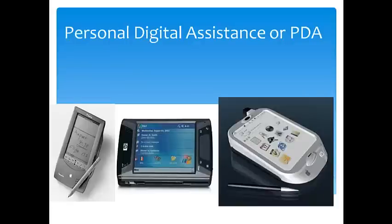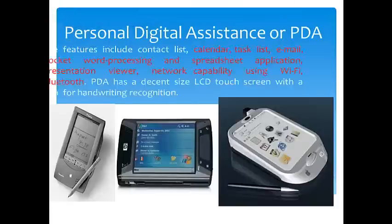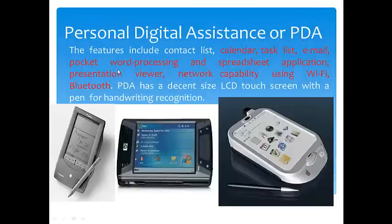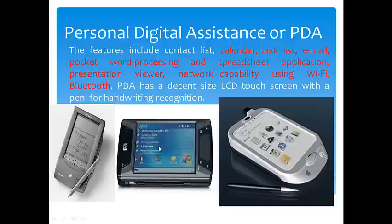Next comes the personal digital assistant, or PDA. The features of PDA include calendar, task list, email, pocket, word processing, spreadsheet, applications, presentation, and network capabilities including Wi-Fi. The PDA has a decent LCD touch screen. Nowadays, PDA comes with many options — we can work with Word, presentations, PowerPoint, check emails, and connect to various types of networks.